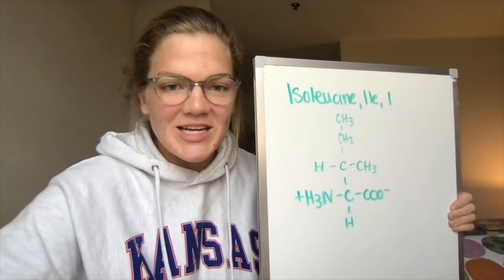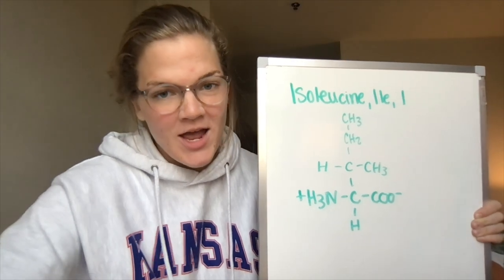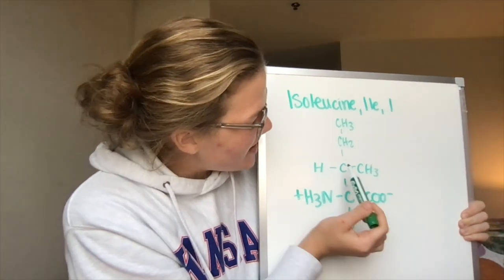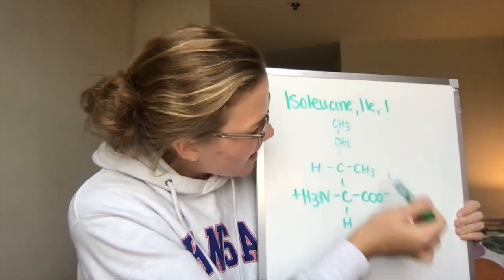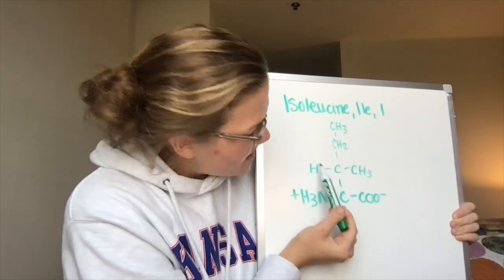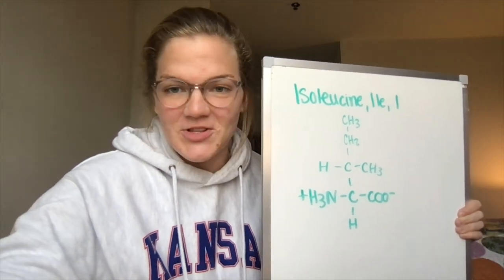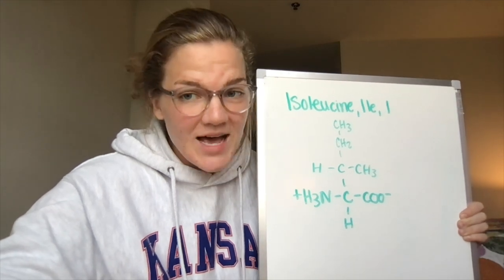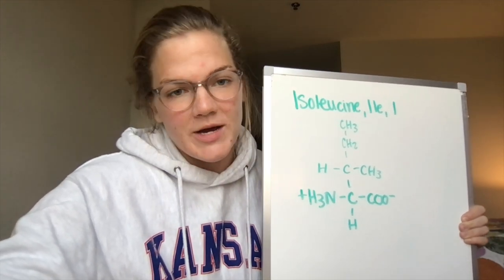Next we got isoleucine with the three-letter abbreviation of ILE, the one-letter abbreviation of I. For our side chain here, it's a little bit different — carbon-carbon, methyl on the top and on this first carbon here and a hydrogen. A fun fact about isoleucine is that it is a metabolite that is found or produced by E. coli.